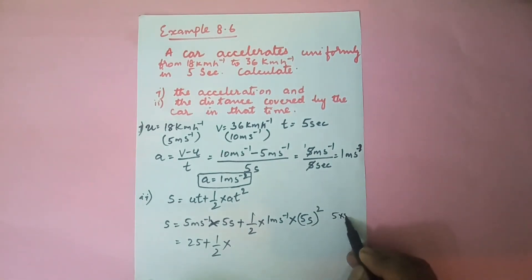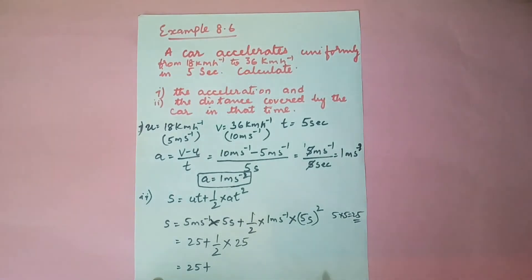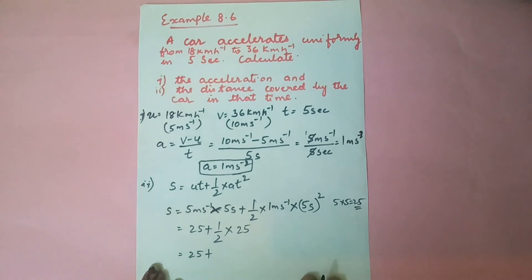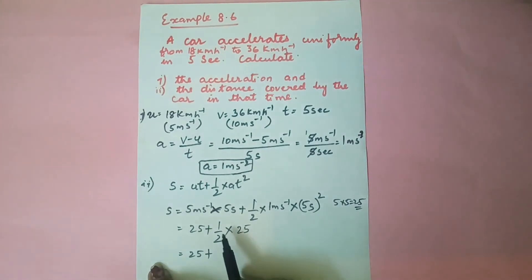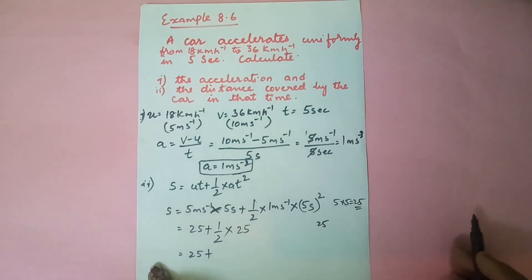5 into 5 is 25, and 25 into 1 is 25 only. So let us write down in the next step: 25 plus, now we have half into 25.